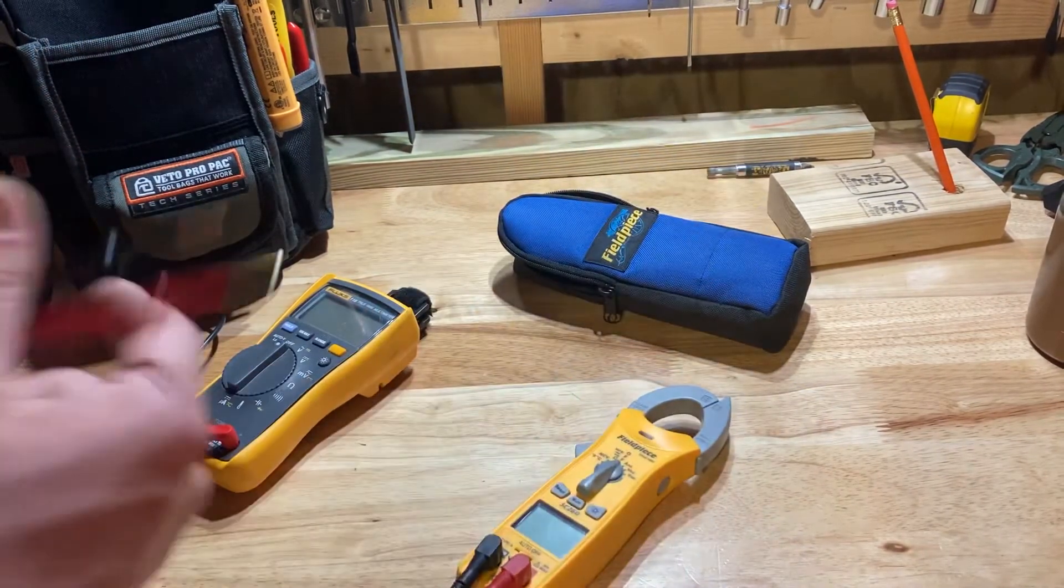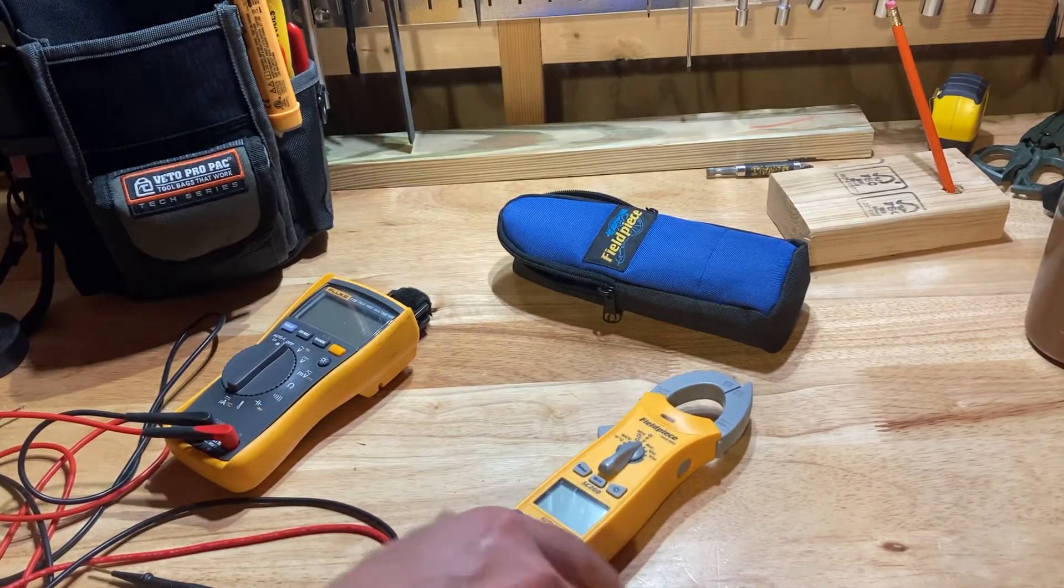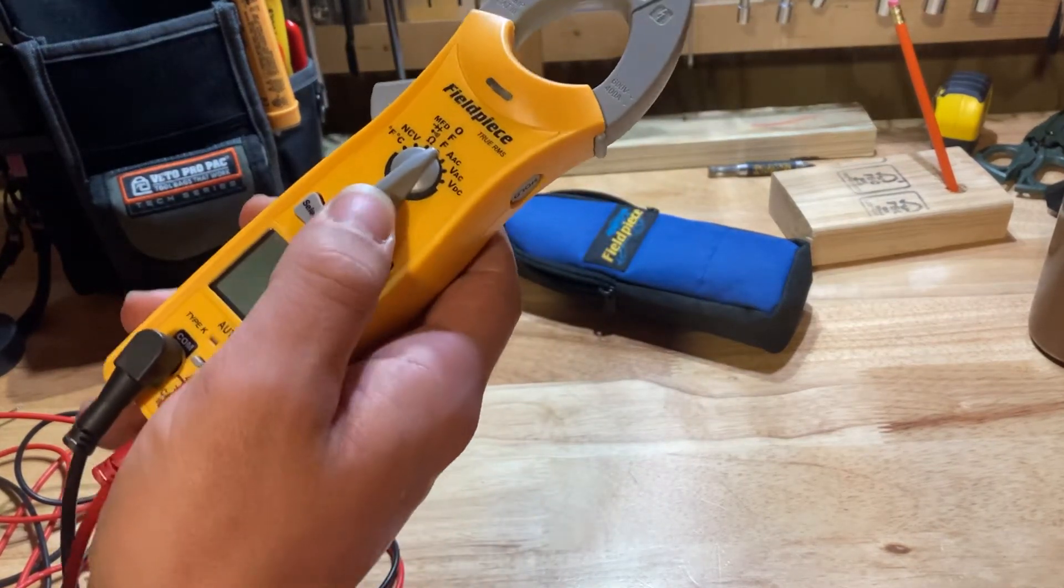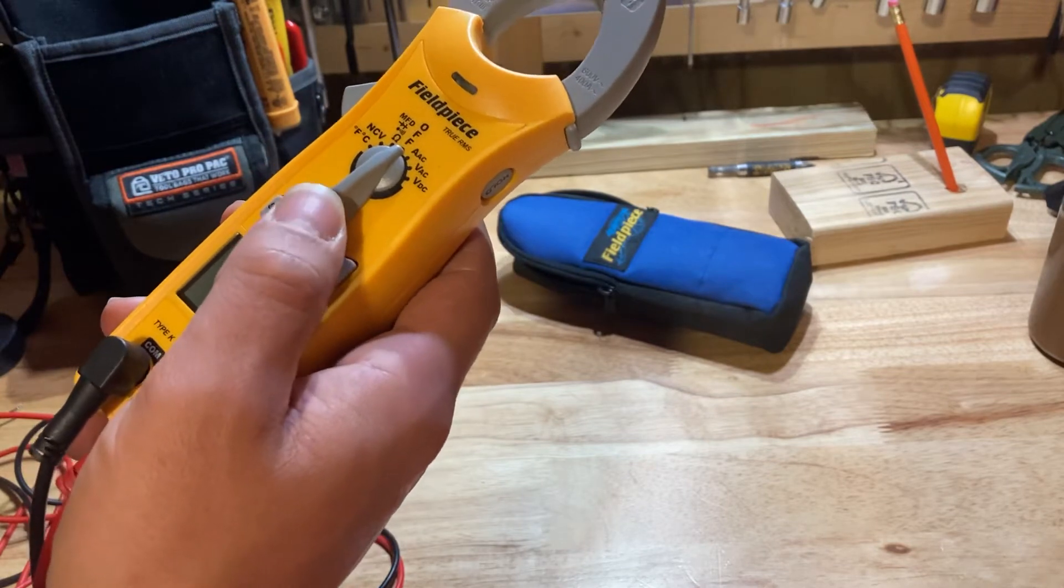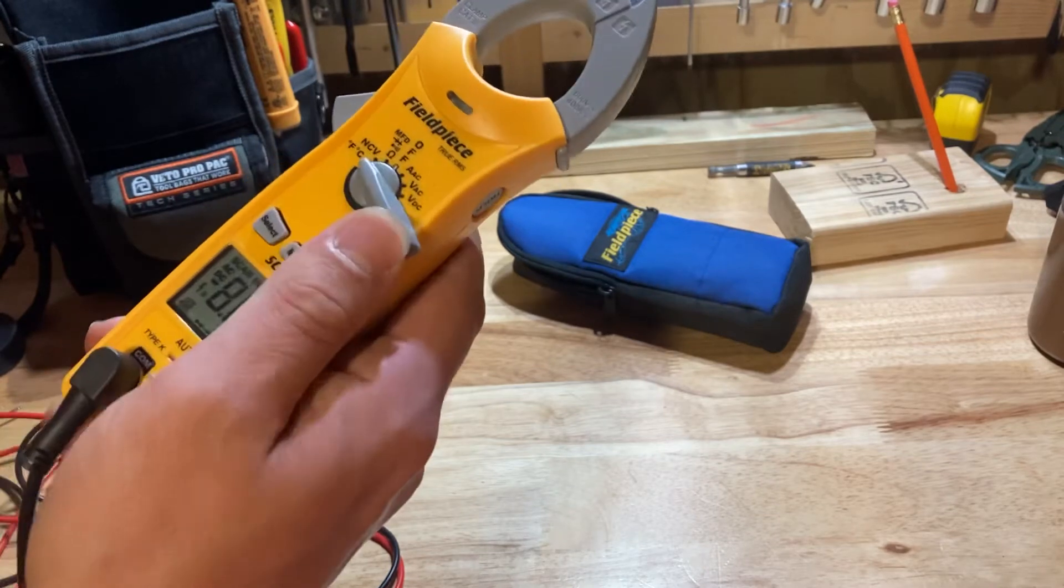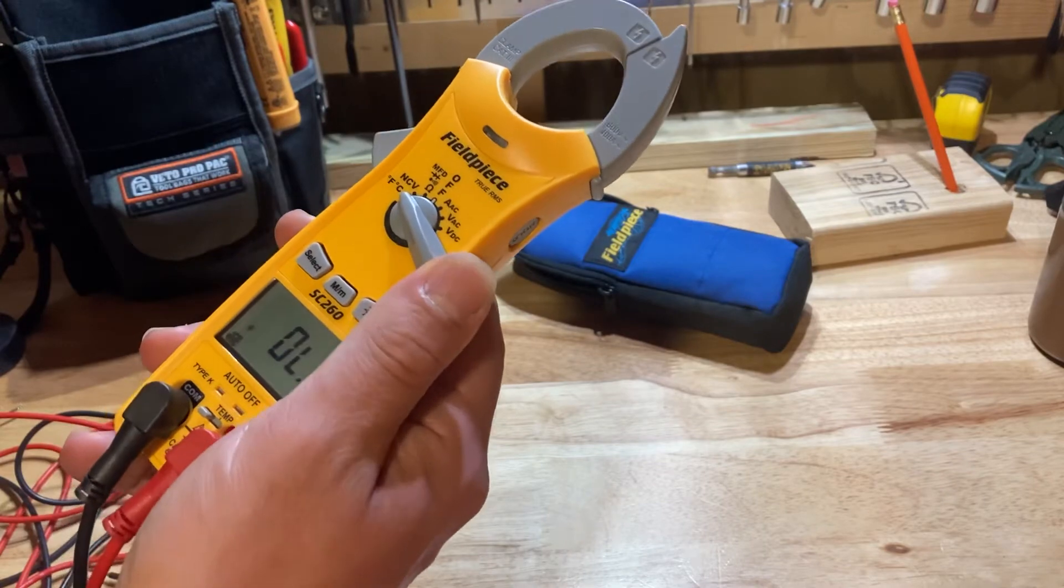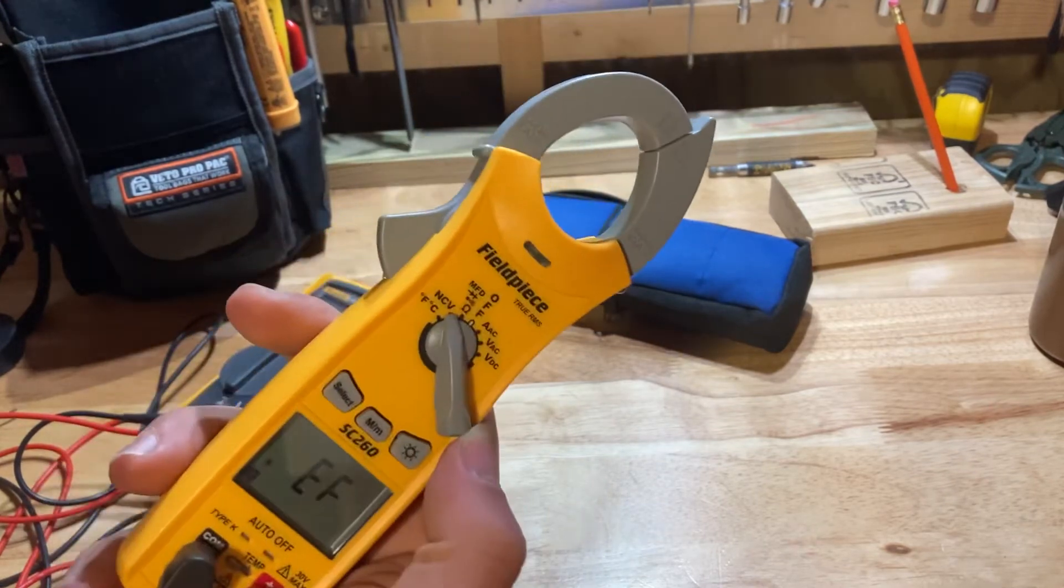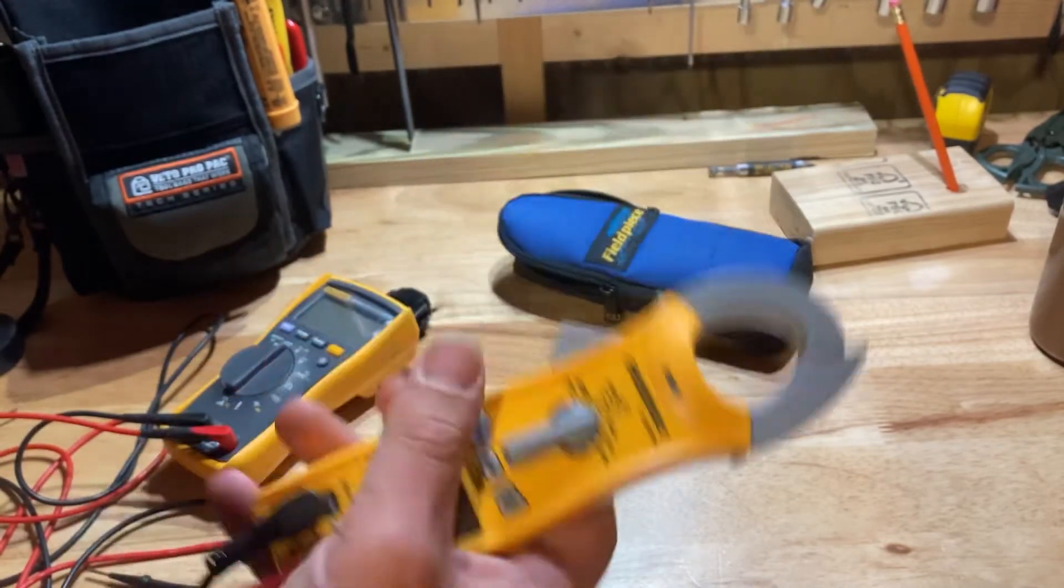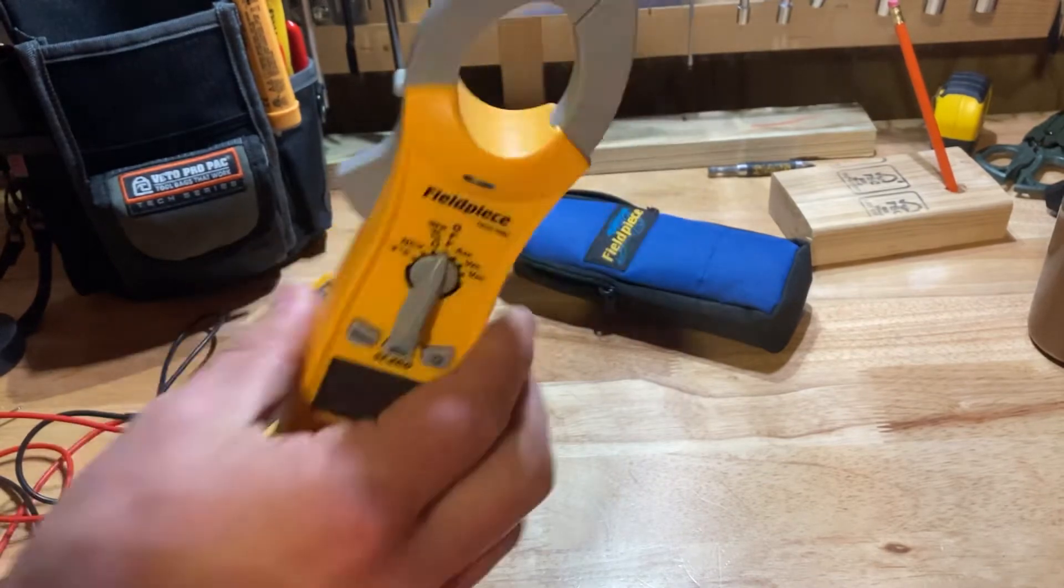This is nice to have. Like, if you were on a budget, this thing, I don't know, I think you get it for $120-something bucks, and it does all the stuff you need. It does volts AC and DC, amps, microfarads, continuity ohms. It does temperature. It has the K-type temperature probes that come with it. It has a non-contact voltage detector, which is pretty lame on this. I wouldn't use that at all. The best thing about this meter is it has a magnet on the back. Stick it to a unit.